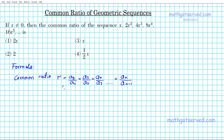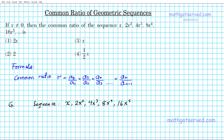If you have two consecutive terms, that's more than enough to find the common ratio of a geometric sequence. In this particular case we have the geometric sequence: x, 2x squared, 4x to the third, 8x to the fourth, and 16x to the fifth. How do we know it's a geometric sequence and not just any sequence?